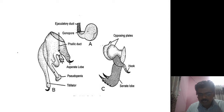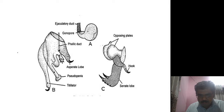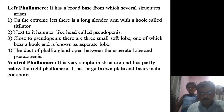Observing the right phallomere, it has two opposing plates and a broad serrated lobe with sawtooth edge and two large teeth at its posterior side. It has a sickle-shaped hook as shown in figure C. The upper portion has the two opposing plates, below that is the hook, and at the lower portion is the serrated lobe having tooth-like projections.